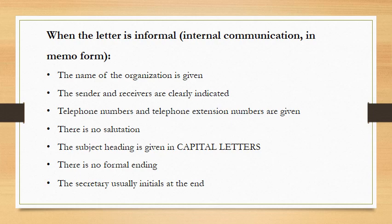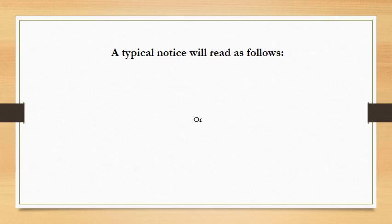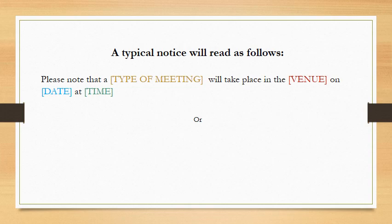It's as easy as that. A typical notice will read as follows: 'Please note that a [type of meeting] will take place in [venue] on [date] at [time].' This is after you've added all the other elements of the formal or informal notice as shown in the previous slide. Alternatively, you could write 'Notice is hereby given.' This is an older style of writing, but it is still used quite often, so you could use this one as well.